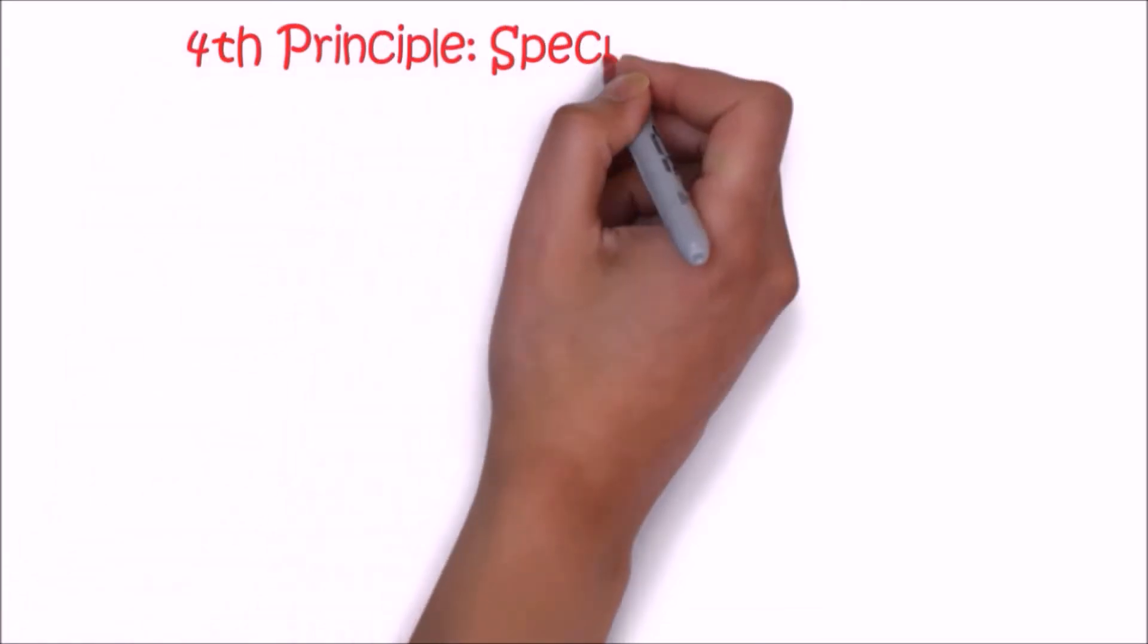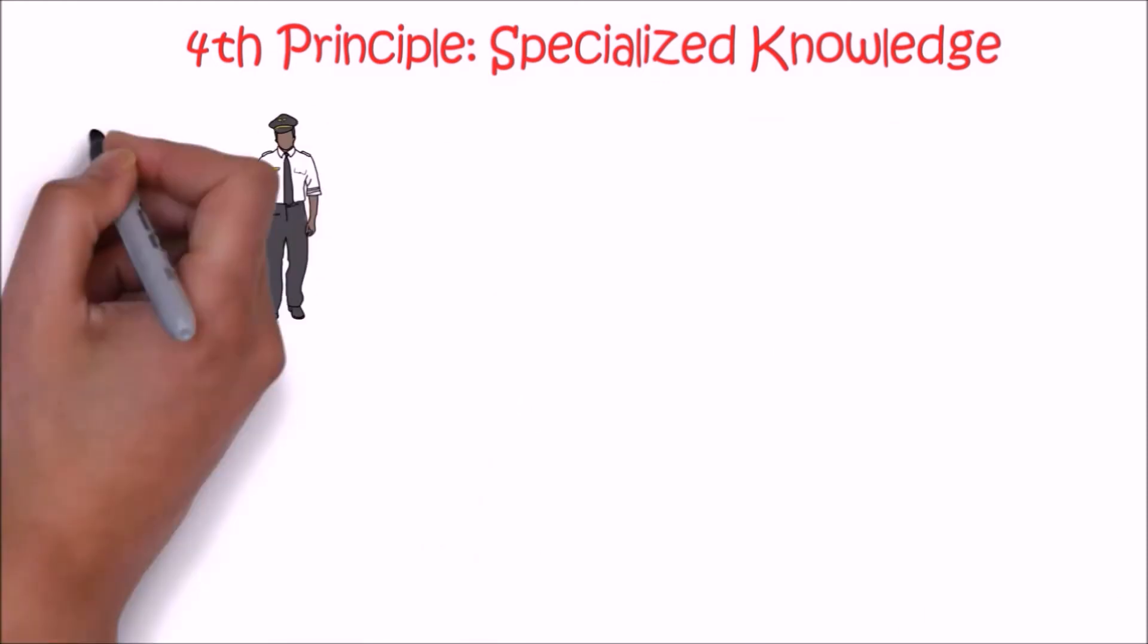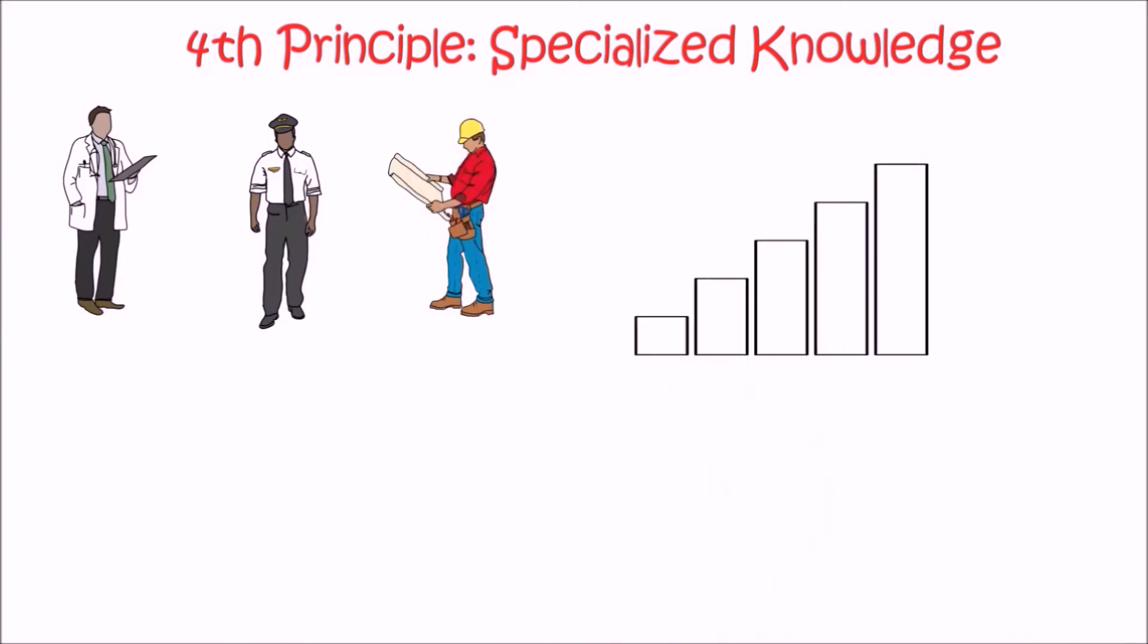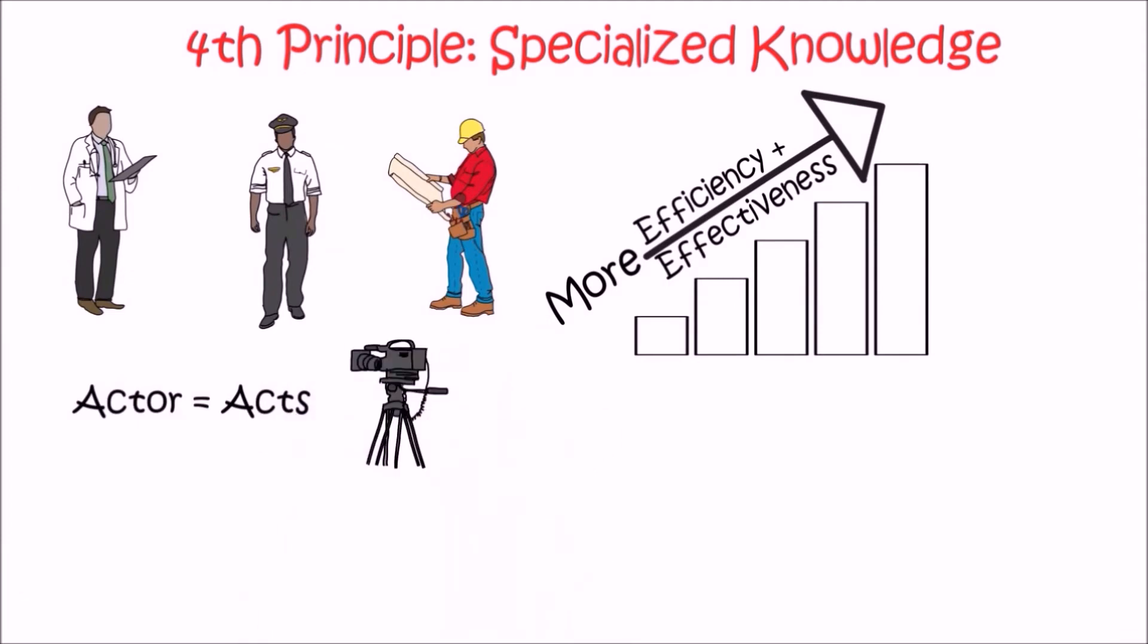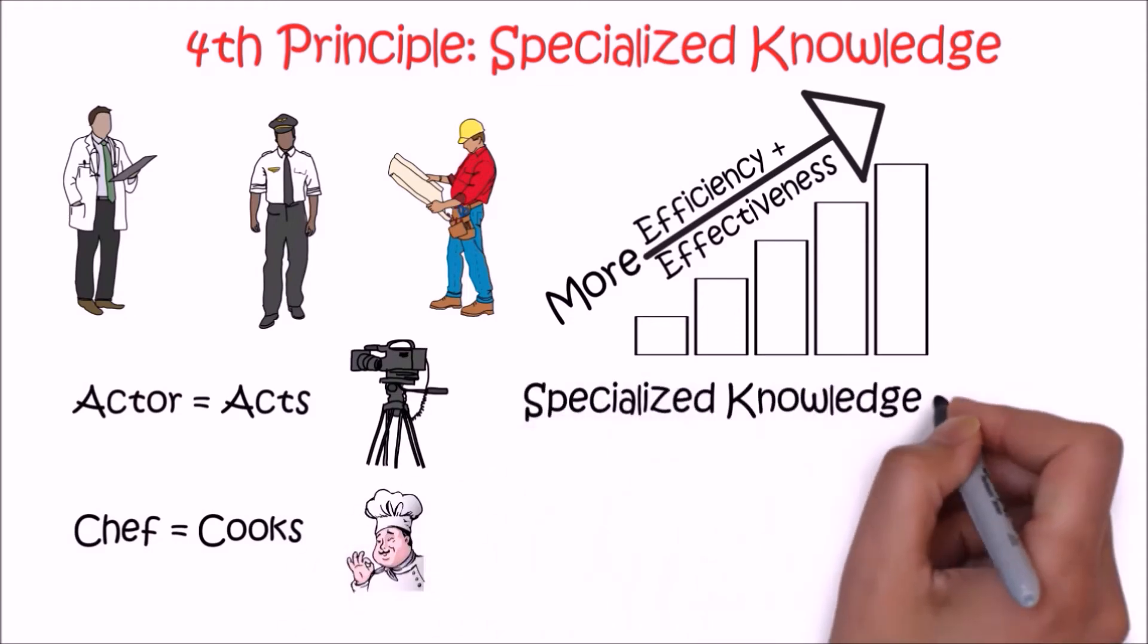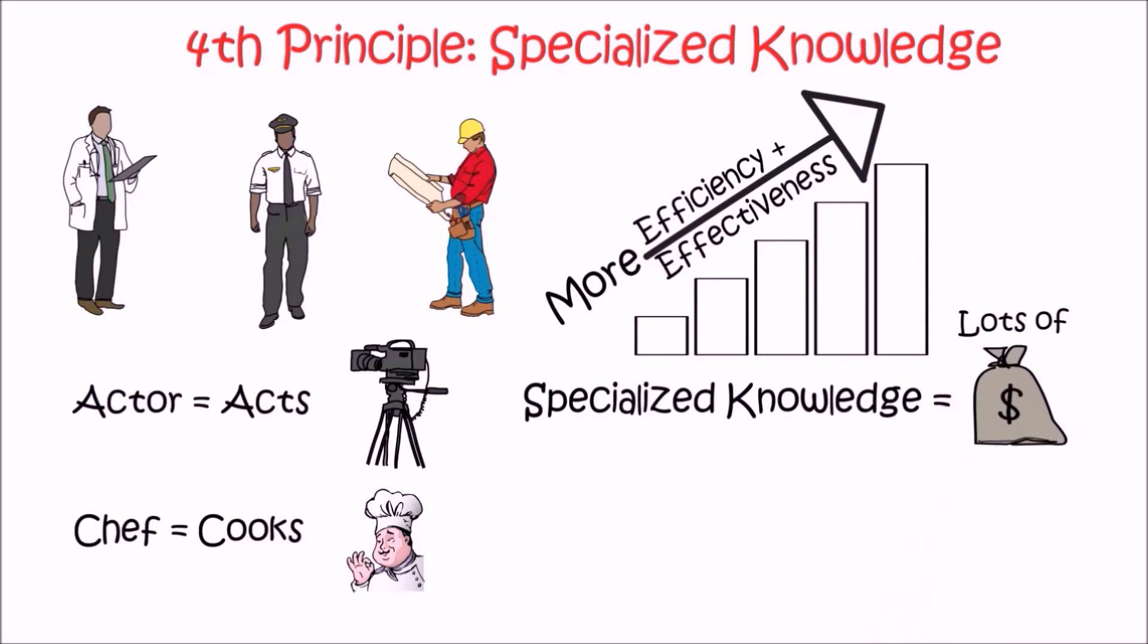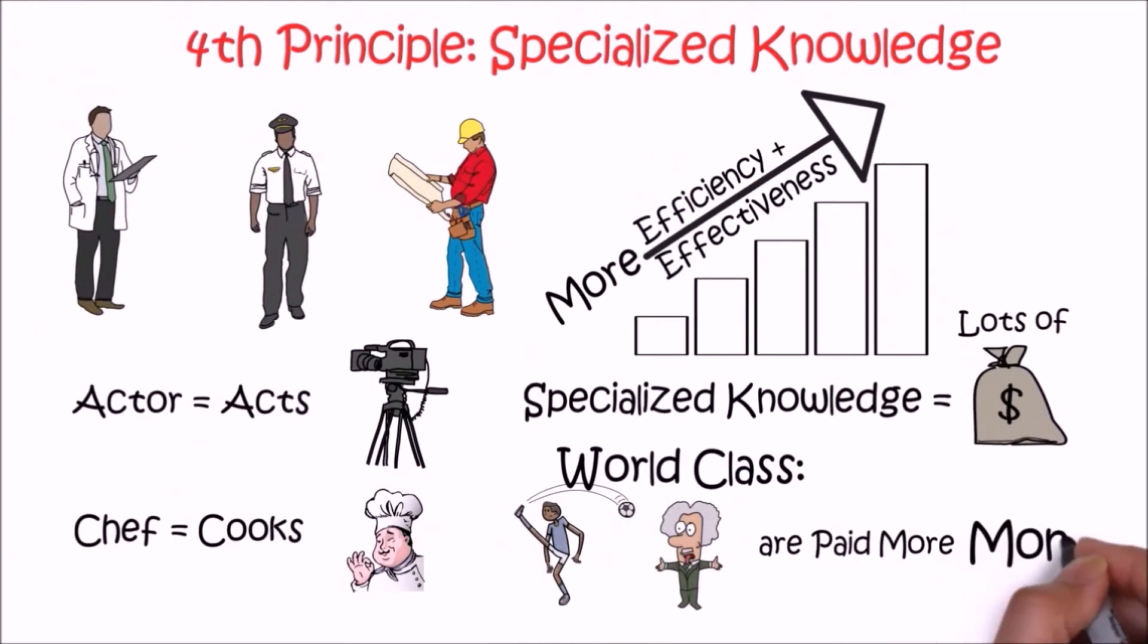The fourth principle is specialized knowledge. With specialized knowledge, a pilot can control a plane, a surgeon can do surgery, and an engineer can design a building. Similarly, with specialized knowledge you can deliver the required service efficiently and effectively. For example, an actor doesn't have to do everything, he just needs to specialize in acting. A chef doesn't have to know about farming or driving, he just needs to specialize in cooking. The more specialized you are, the more you are paid. That's why world-class athletes, speakers, and scientists are paid more, because they know certain things more efficiently and perfectly.